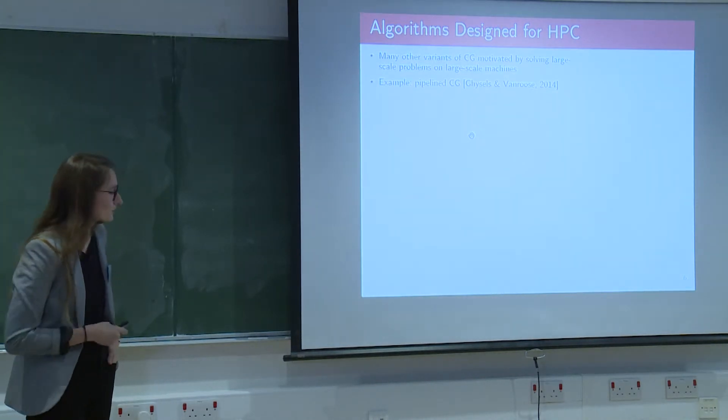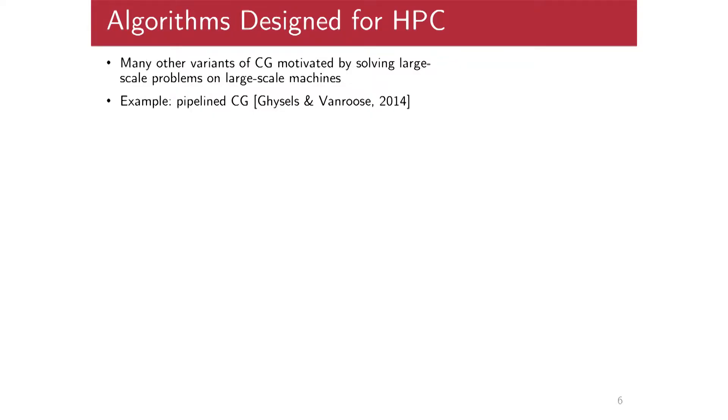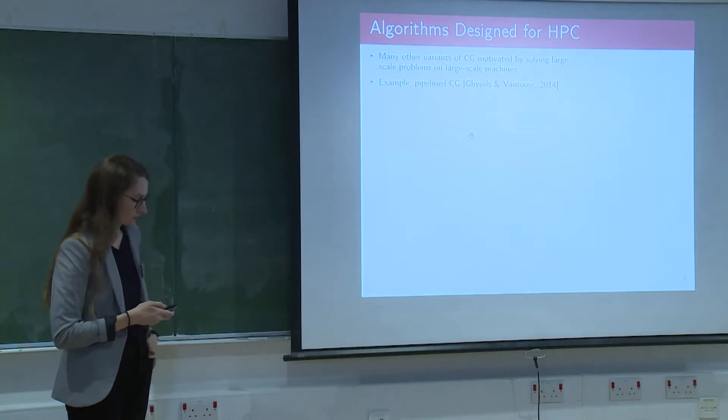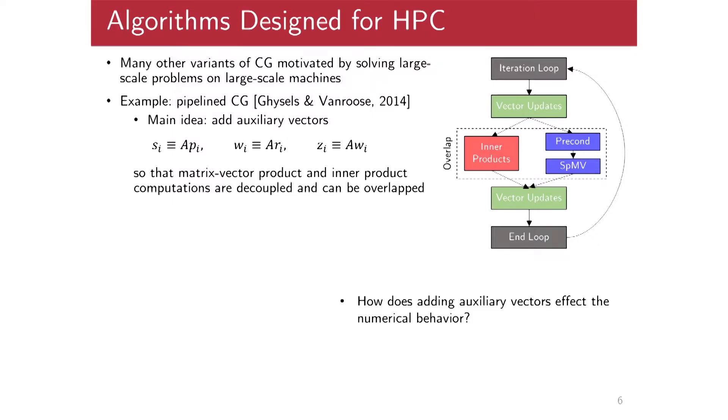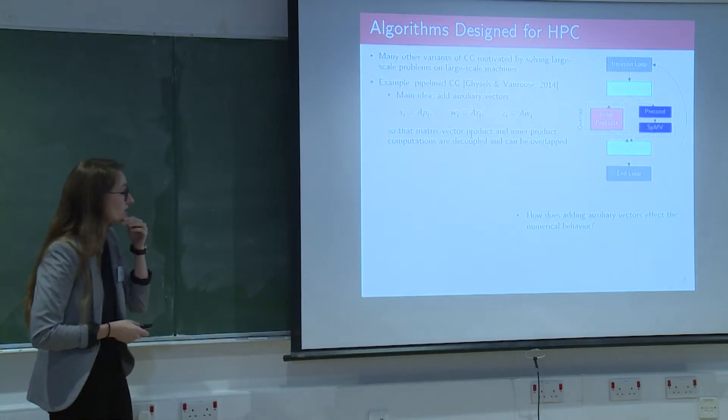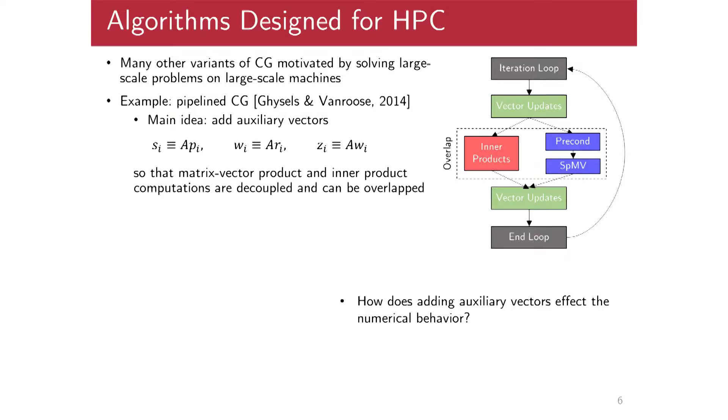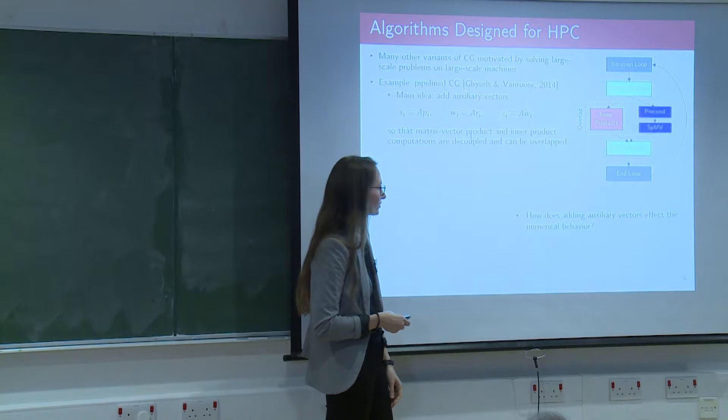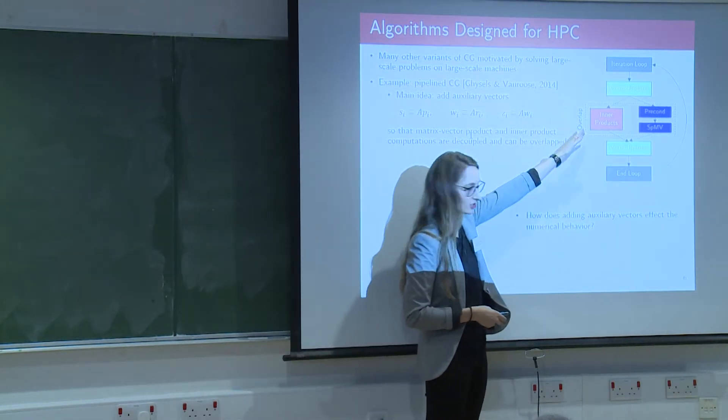Okay, so there are, I could give a whole lecture or a whole course even on other variants of CG that have been developed going back, you know, as much as 50 years motivated by solving large-scale problems on large-scale machines. And so one recent example, which I'll just give an example of, is the, what's called the pipeline CG method due to Geisel's and Van Roo's. And so the main idea here is that you want to introduce some auxiliary vectors, right? And so here, instead of computing A times P, I'll recursively update this vector S that stands for A times P and some others. And doing this allows you to decouple the inner products and the sparse matrix vector products so that they can be overlapped. And this will kind of hide the communication cost in some way. So here's just a small depiction of what one of these iterations looks like. And so using non-blocking MPI communication, you could accomplish these at the same time.